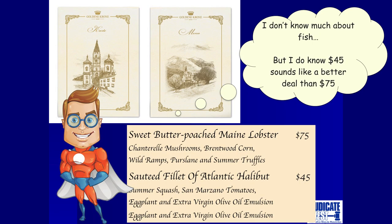We can see anchoring in restaurants. You'll have a menu where a sautéed filet of Atlantic halibut is $45 — it's hard to tell if that's a good deal. How much does the fish cost, how do they prepare it, is this a high-rent district? But if the restaurant puts right above it a sweet butter-poached Maine lobster for $75, now that halibut starts to look pretty good. System 1 has a hard time figuring out the value of halibut on its own, but if asked which looks better — $75 lobster or $45 halibut — System 1 can answer that. In fact, some restaurants put their most profitable item just underneath a really absurdly expensive item, so the profitable one looks like a great bargain.